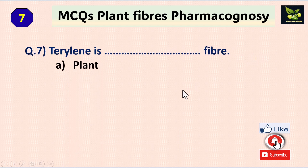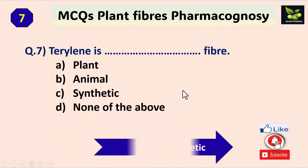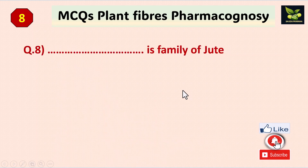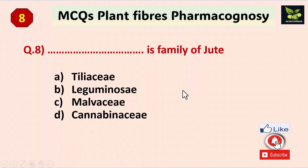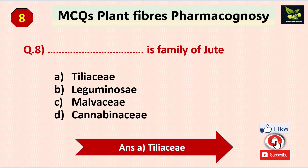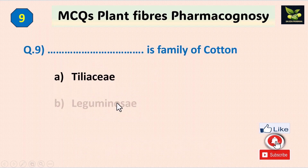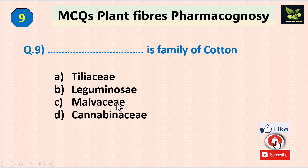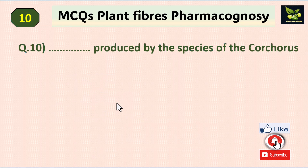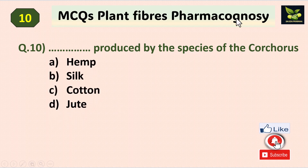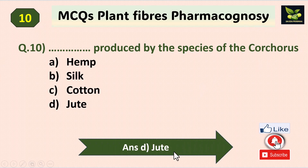Terylene is also an example of a synthetic fiber. Question seven: what is the family of jute? Options are Tiliaceae, Leguminosae, Malvaceae, and Cannabinaceae. The answer is Tiliaceae — don't confuse it with Liliaceae. Question eight: what is the family of cotton? The answer is Malvaceae. Question nine: which fiber is produced by the species of Corcorus? The answer is jute.